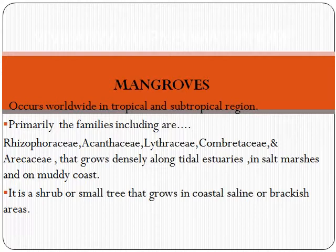This type of mangroves grows in those particular areas. Mostly, the families which include the mangroves are Rhizophoraceae, Acanthaceae, Lythraceae, Combretaceae, and Araceae. These plants grow along tidal estuaries — where fresh water and marine water combine, that means salty water and fresh water combine. They are mainly salt marshes and also grow on muddy coasts.